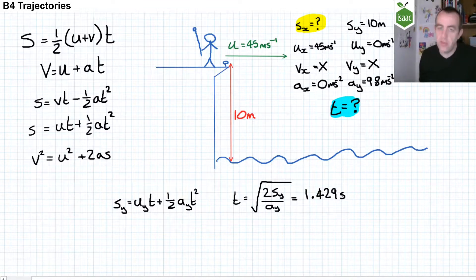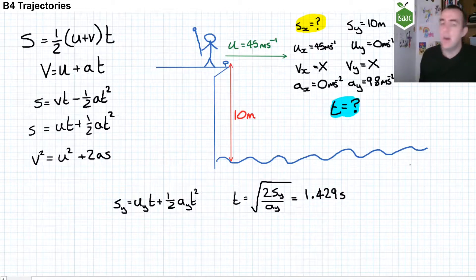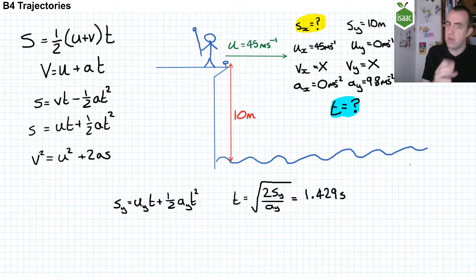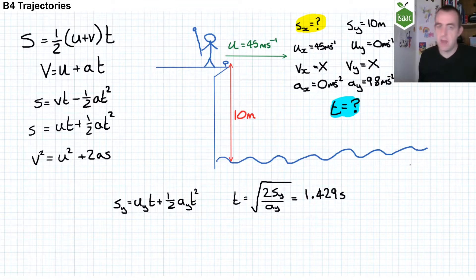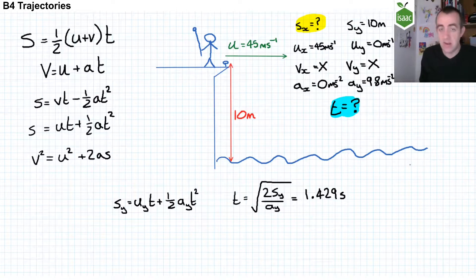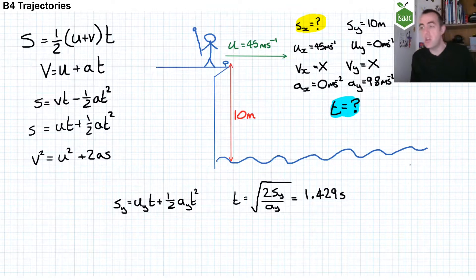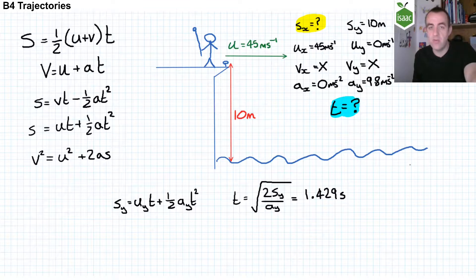You'll notice I've kept four significant figures because this is an intermediate calculation. I'm going to use this calculation to substitute the time into the equation for the x-direction. And because I don't want to accumulate rounding errors on one of the significant figures I intend to keep, I've kept two additional guard digits to prevent those round-off errors.